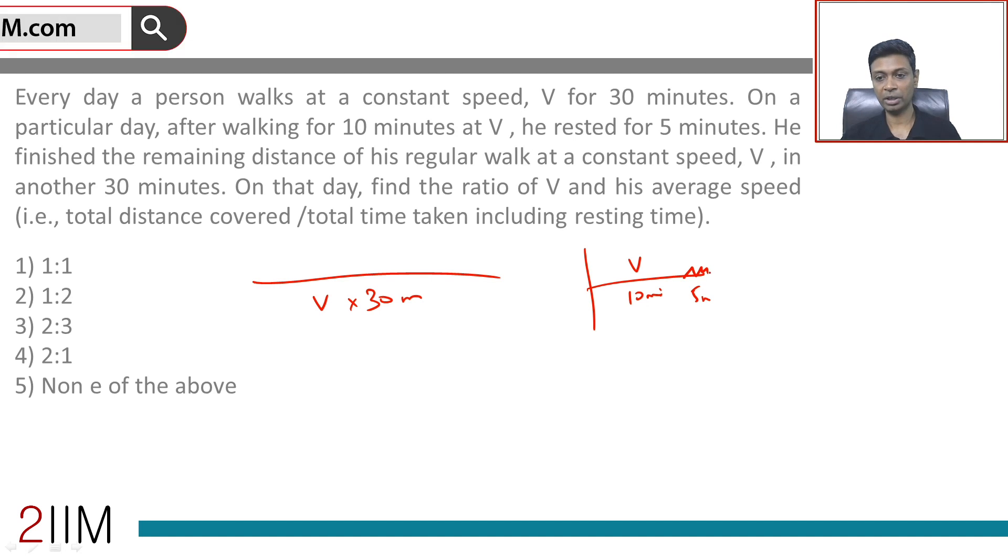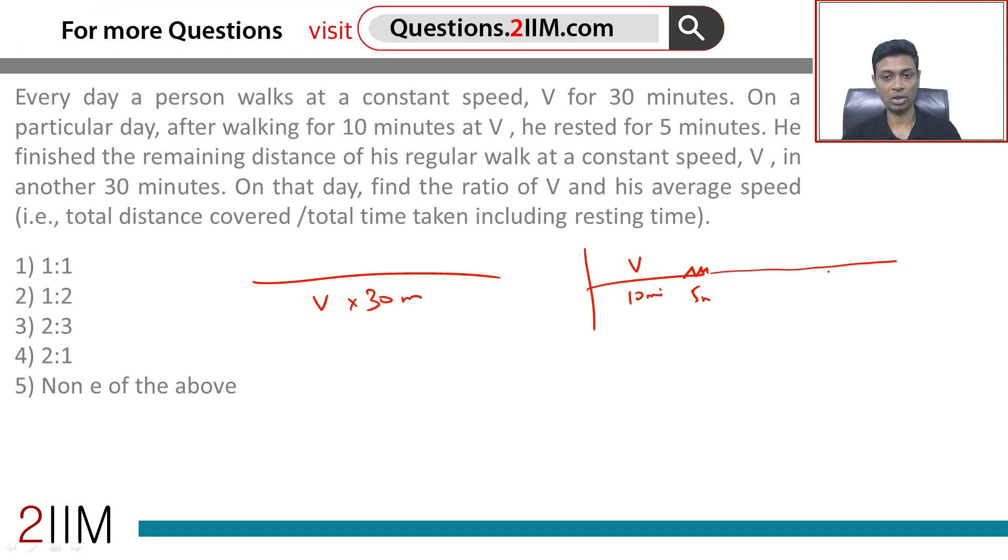He finished the remaining distance at a constant speed, call it v2. Let's keep the original speed as v1. So at v1 for 30 minutes normally, but on this day: v1 for 10 minutes and constant speed v2 for 30 minutes to cover the full distance.